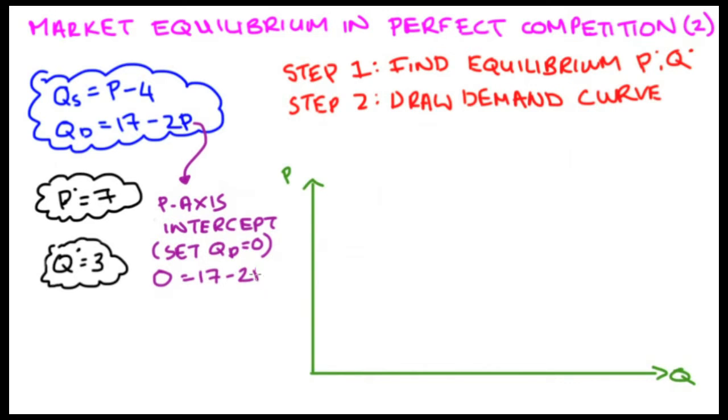If I do that, I get 0 is equal to 17 minus 2P. I'm going to minus 17 from both sides. So I get 0 minus 17 is equal to 17 minus 2P minus 17. The positive 17 and negative 17 cancel out. And the 0, of course, doesn't matter, so I can just disregard that. And I get negative 17 is equal to negative 2P.